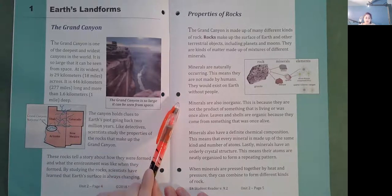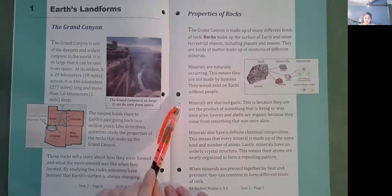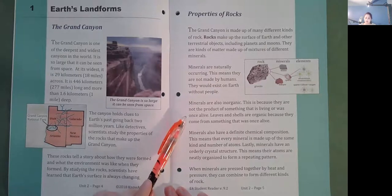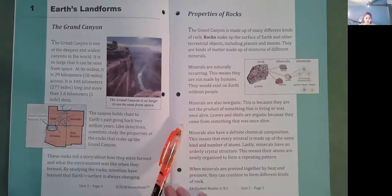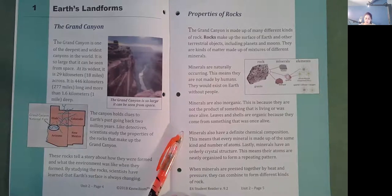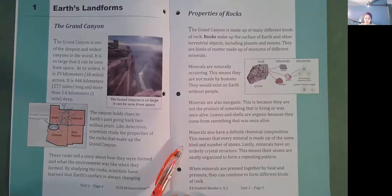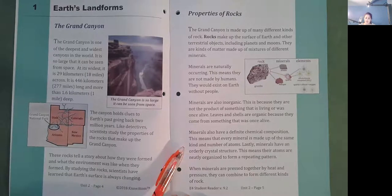Minerals are also inorganic. This is because they are not the product of something that is living or was once alive. Leaves and shells are organic because they come from something that was once alive. Minerals also have a definite chemical composition. This means that every mineral is made up of the same kind and number of atoms.